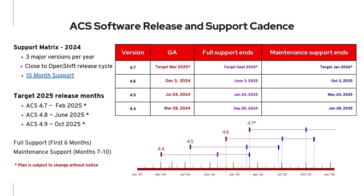With every new ACS release comes a new support cadence. ACS full support begins at the general availability of the minor version and ends after a six-month period, in which case maintenance support kicks in. We expect ACS customers to try and keep their environments up to the most current supported micro version. The plan for releases in 2025 includes the next ACS release having a short turnaround, with ACS 4.7 targeted for March.